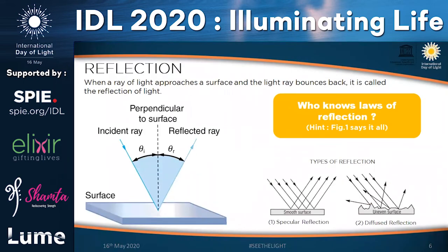I would like Mr. Abhishek to explain to us about light. In specular reflection, whenever light falls on a smooth surface, it reflects back uniformly. In diffused reflection, whenever light falls on an uneven surface, it doesn't reflect uniformly — it reflects at different angles. That is what we call diffused reflection.